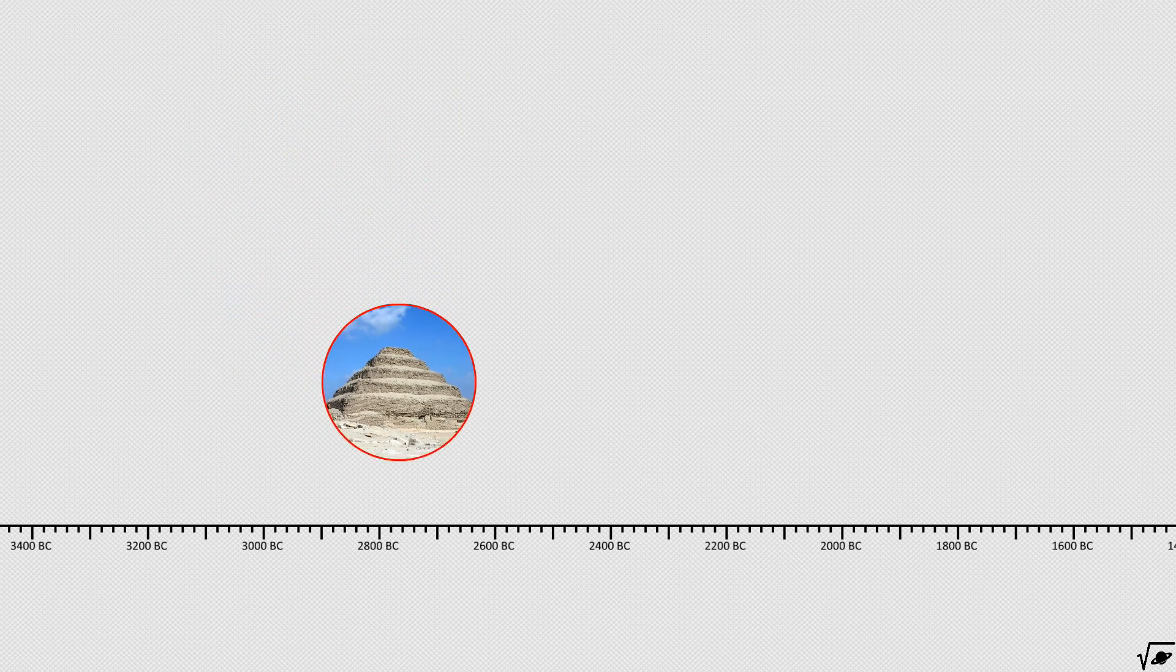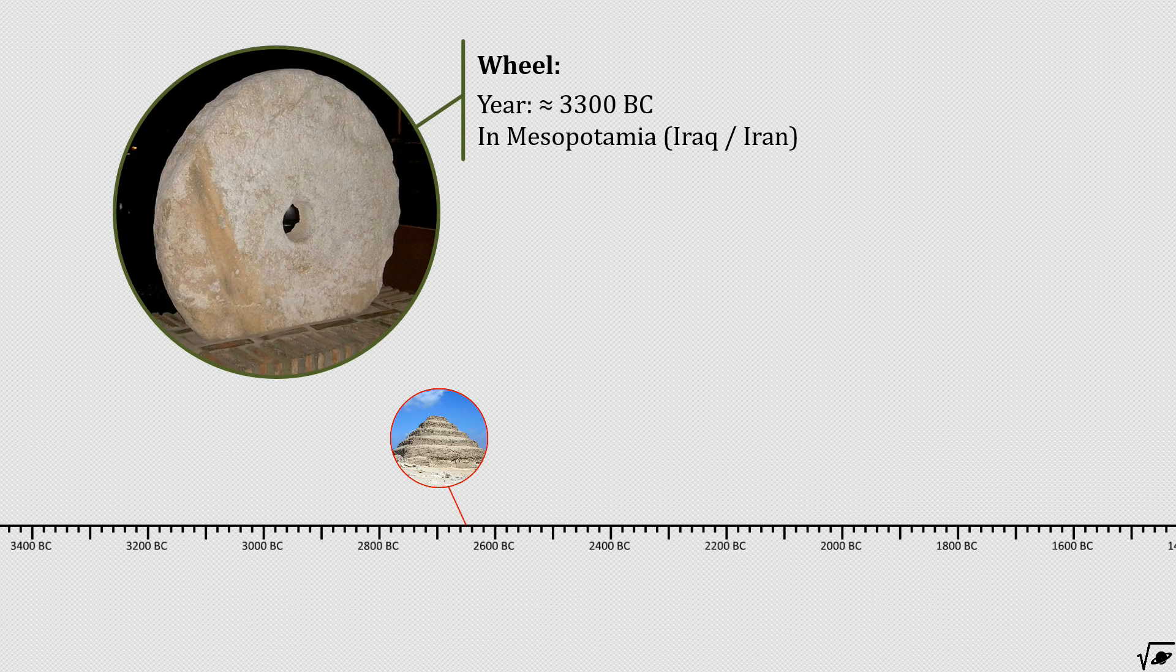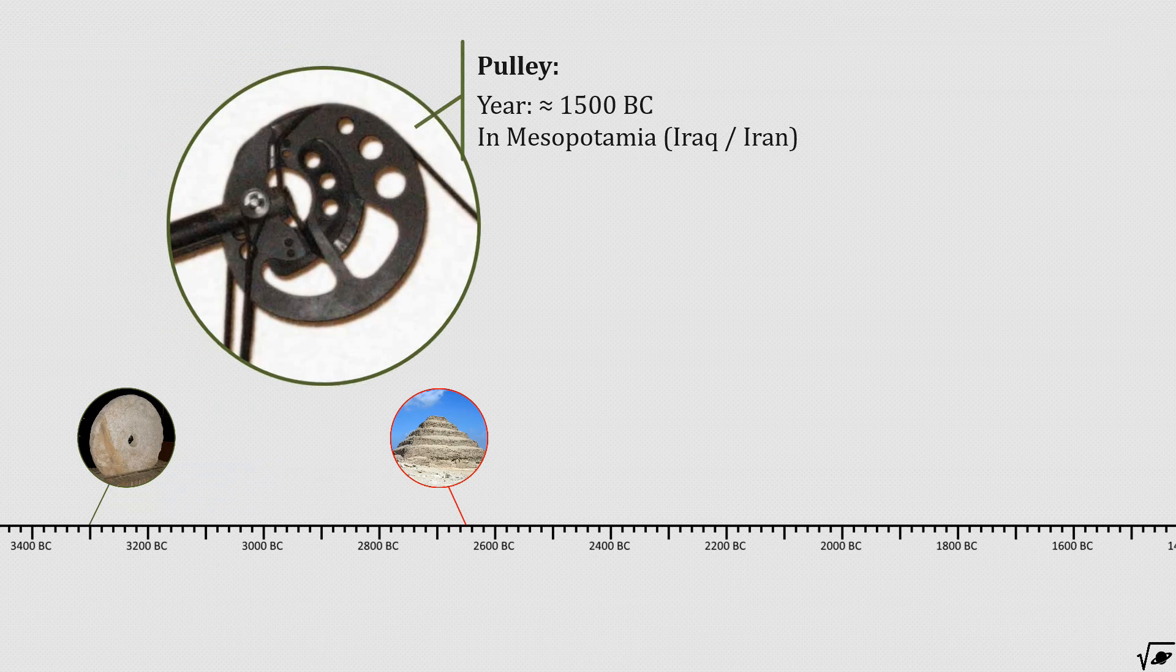All these pyramids were constructed without the use of wheels or pulleys. Although wheels were already commonly known in the middle east, they strangely didn't get to Egypt. Pulleys however wouldn't be invented till a thousand years later.